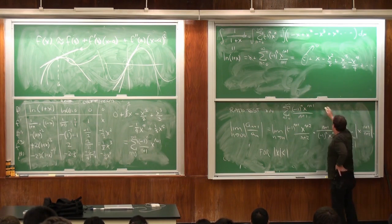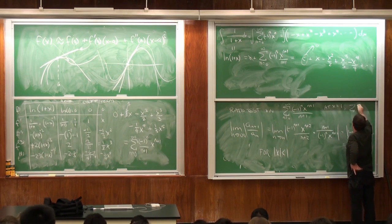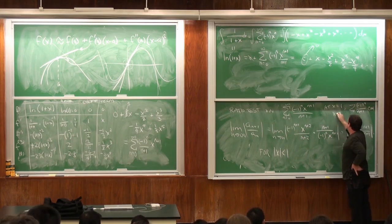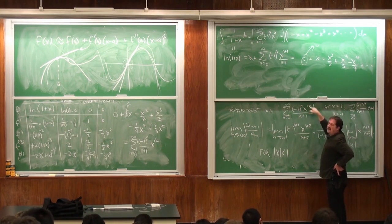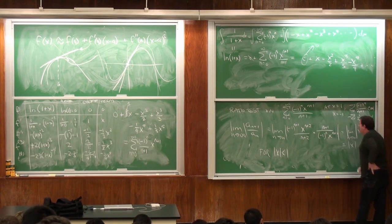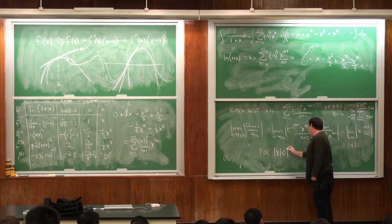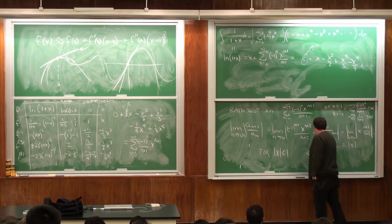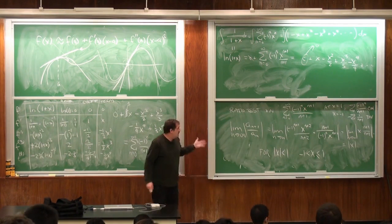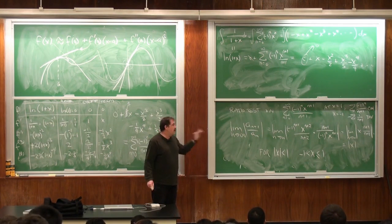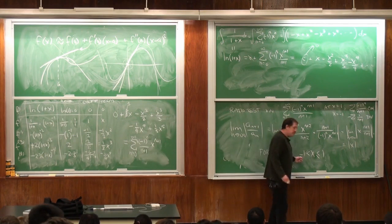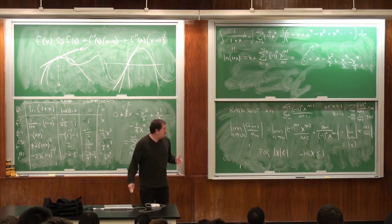Checking the endpoints: at x equals 1, the series becomes (minus 1 to the n) over (n+1), which is an alternating series with terms going to zero, so it converges. At x equals minus 1, the (minus 1) to the n times (minus 1) to the (n+1) is always minus 1, so we get the divergent harmonic series with negative sign. So the series converges for x in the interval (minus 1, 1], meaning I can calculate log of 2 with this series but not log of 2.01.